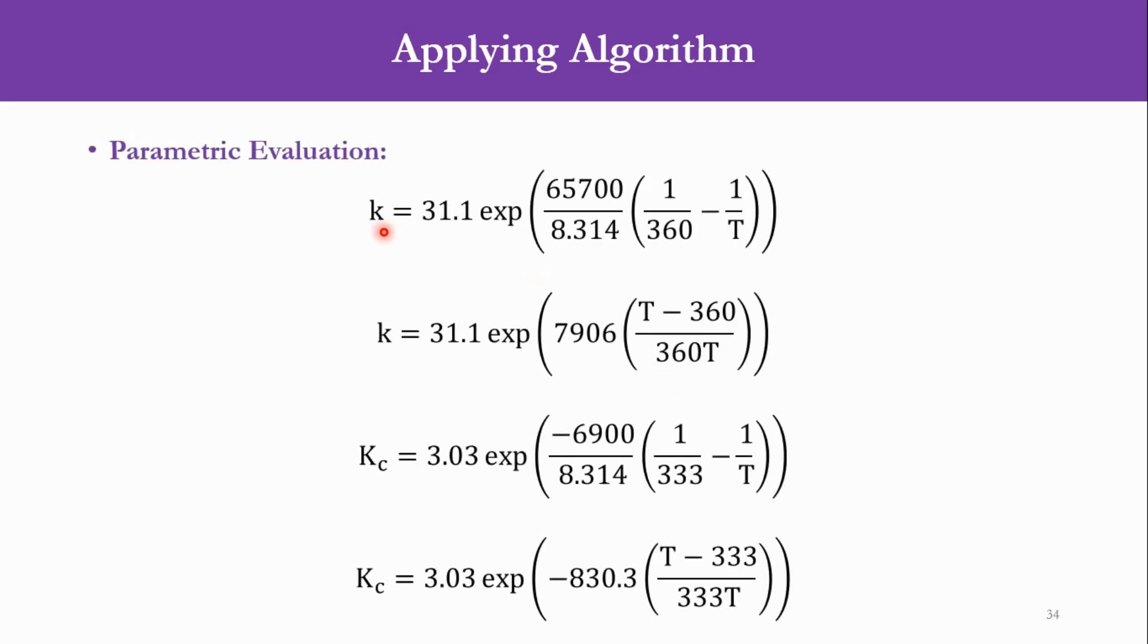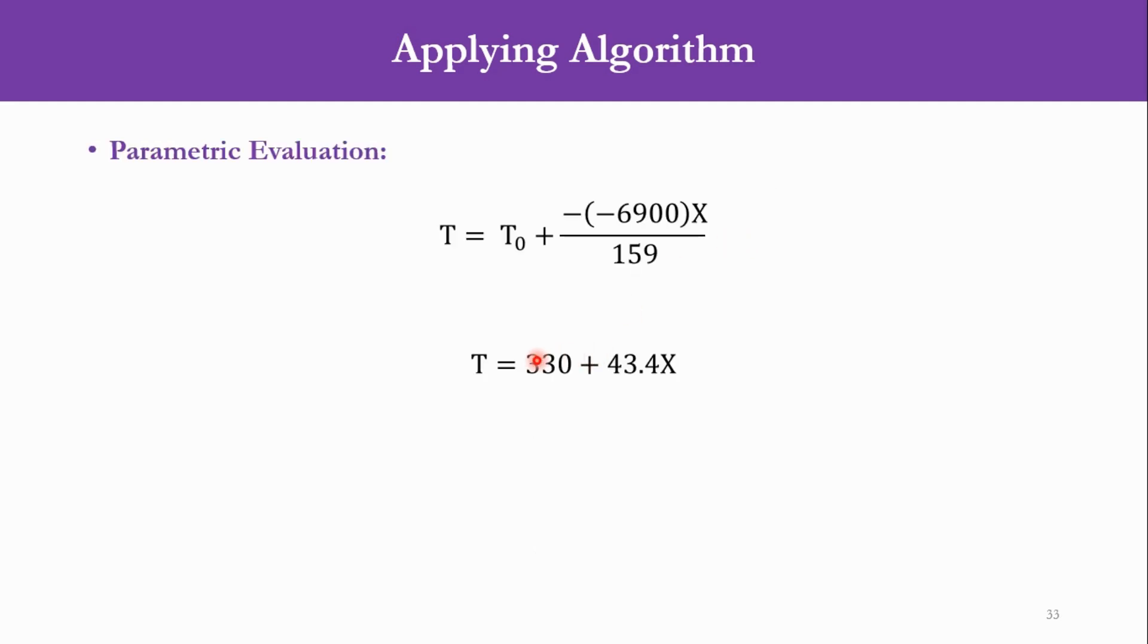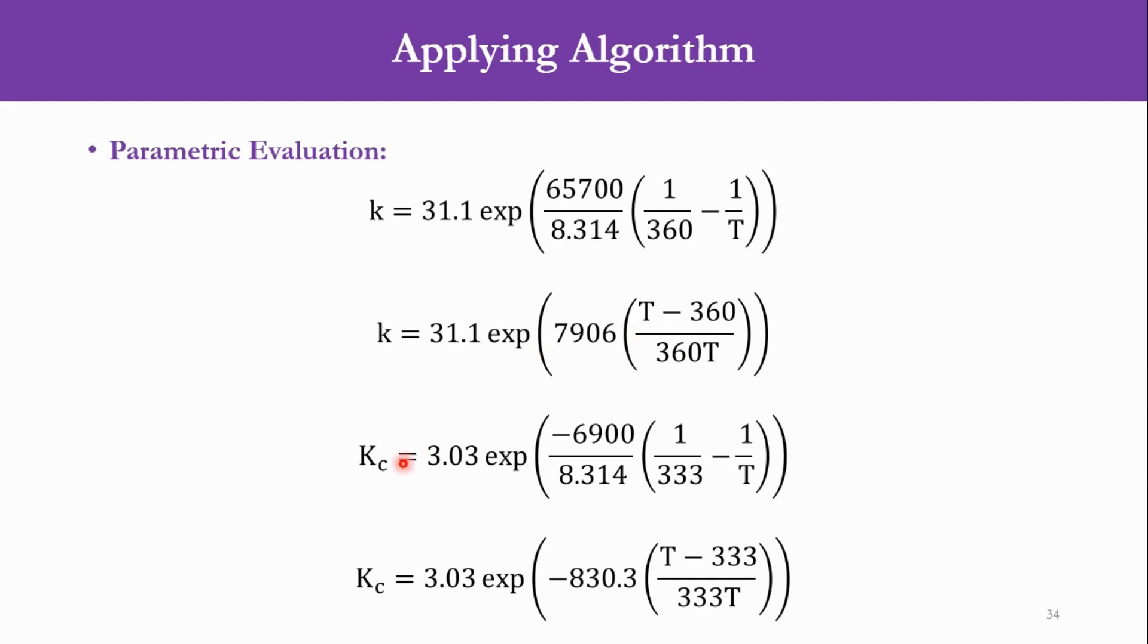In parametric evaluation, if you come here, K = K0 × exp[Ea/R(1/T0 - 1/T)]. The value of activation energy is 65,700, while R is 8.314, and the reference temperature is 360. While the system temperature will be calculated with the equation of T which is in the previous slide. Similarly for Kc, the same thing will go on. K was given at 360, and similarly for this system, the value of Kc is given at 333 Kelvin.